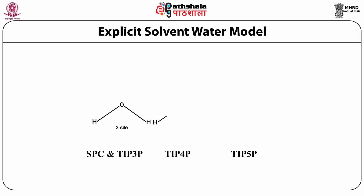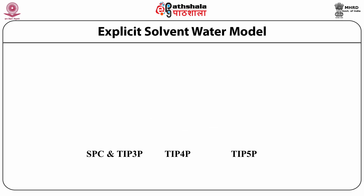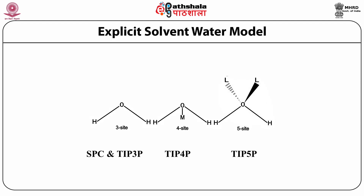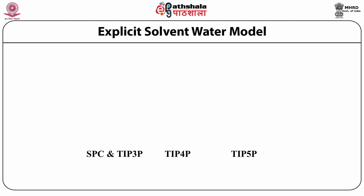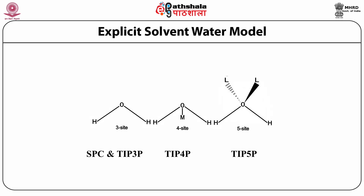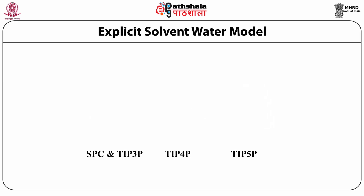Different types of water models are available for MD simulations: SPC, TIP-3, TIP-4, and TIP-5. These models indicate the number of interacting points. In the three-site model, water has one interaction site for oxygen and two for hydrogens. In the four-site model, an additional dummy atom M improves the accuracy of water properties during simulations. TIP-5 is a five-site model where two additional points represent lone pair positions. The accuracy of MD simulations increases with more interaction sites, but at the cost of greater computational effort.